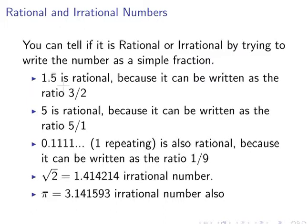5 is rational because it can be expressed as 5/1. 0.1111 one repeating is also rational because it can be written as the ratio 1/9.